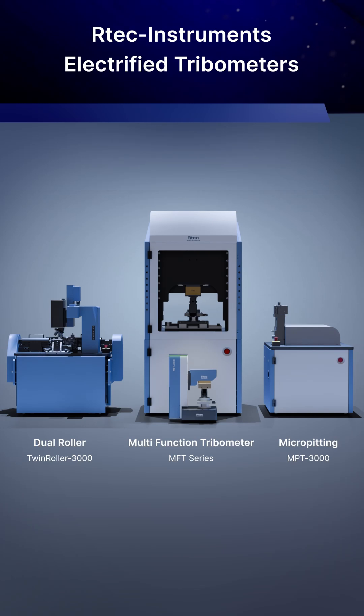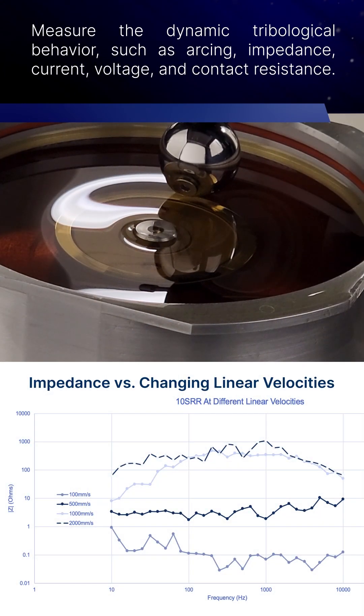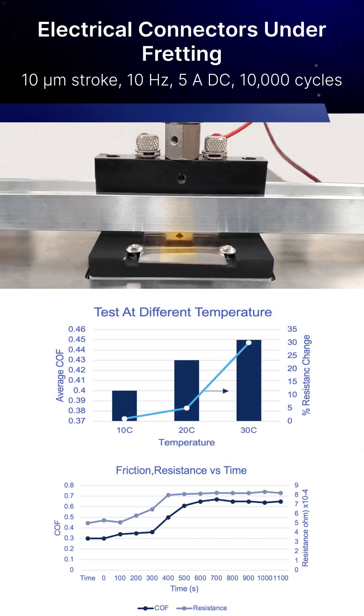Artec Instruments' cutting-edge tribometers conduct electrified tests that measure critical aspects like arcing, impedance, current, voltage, and contact resistance under various AC and DC waveforms.